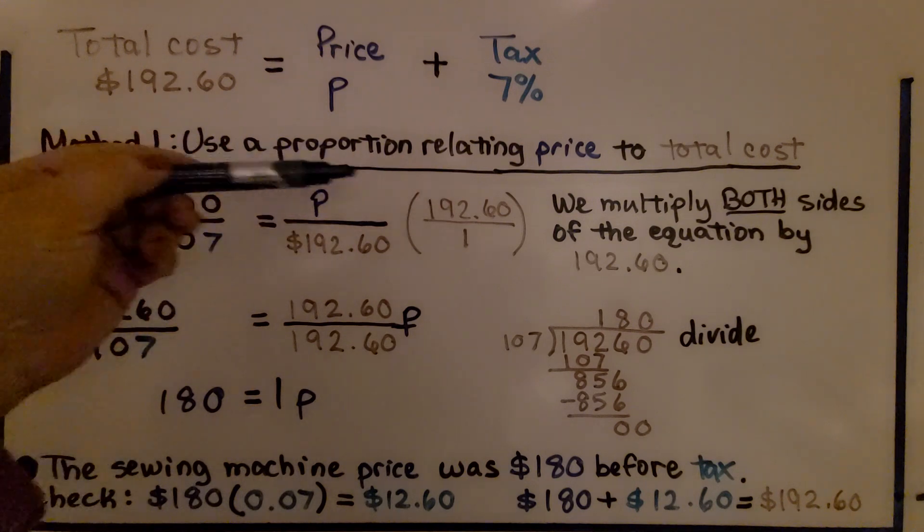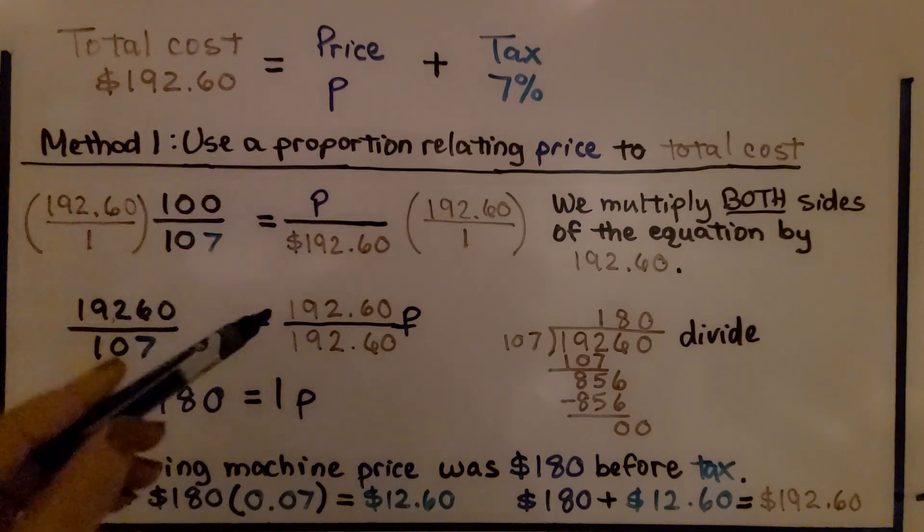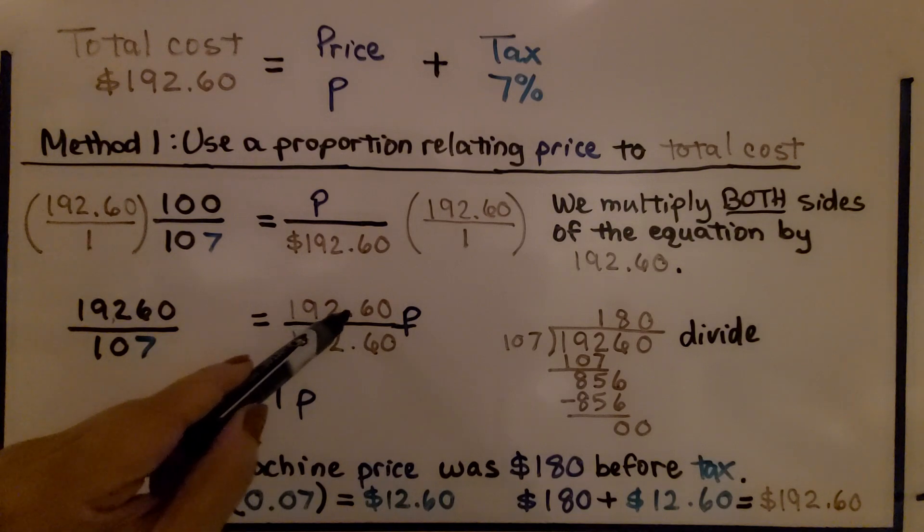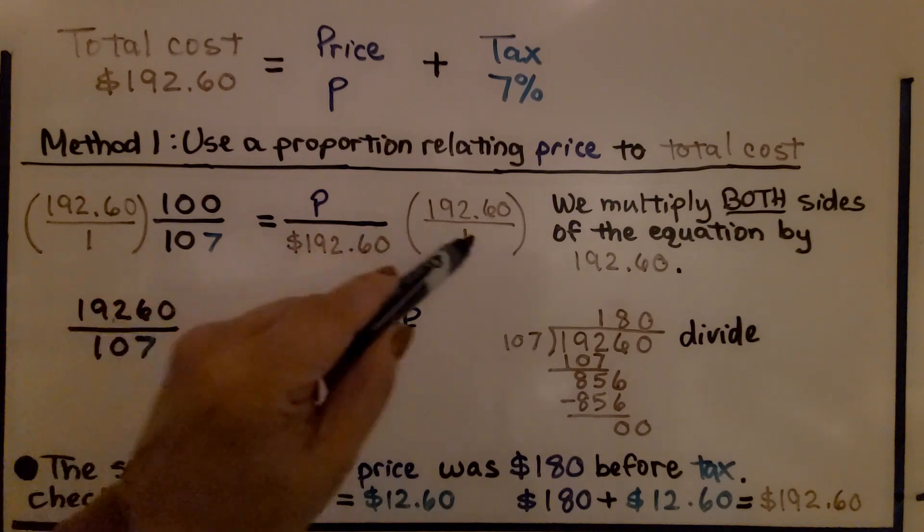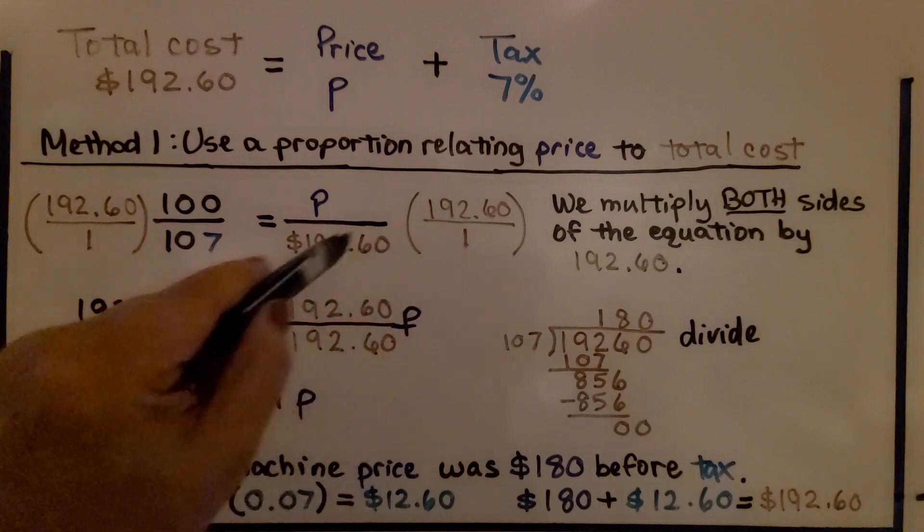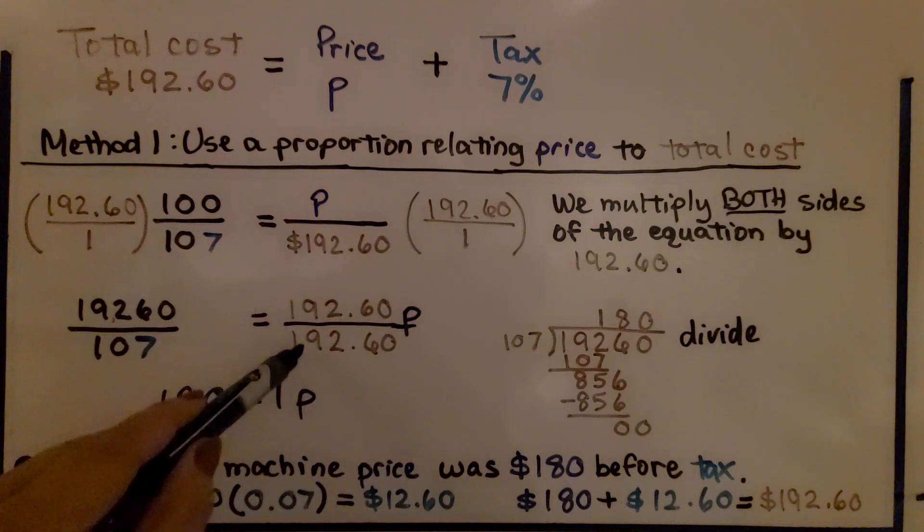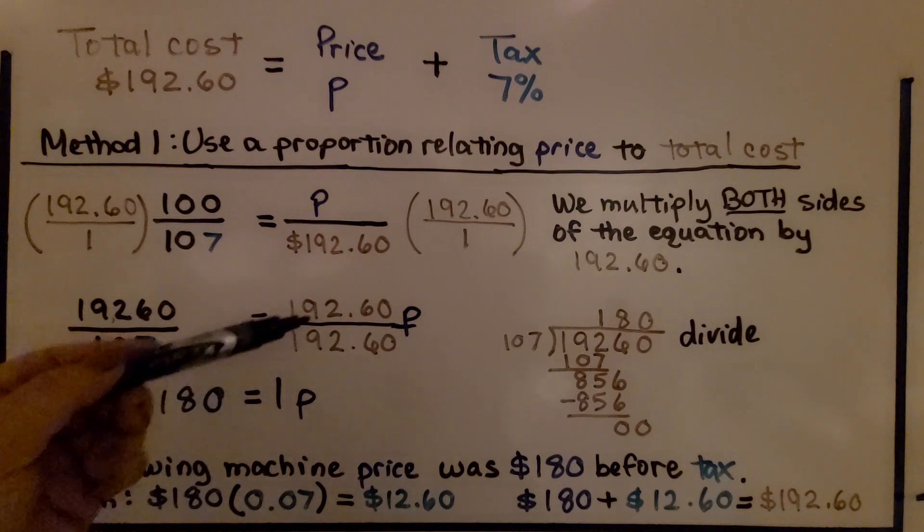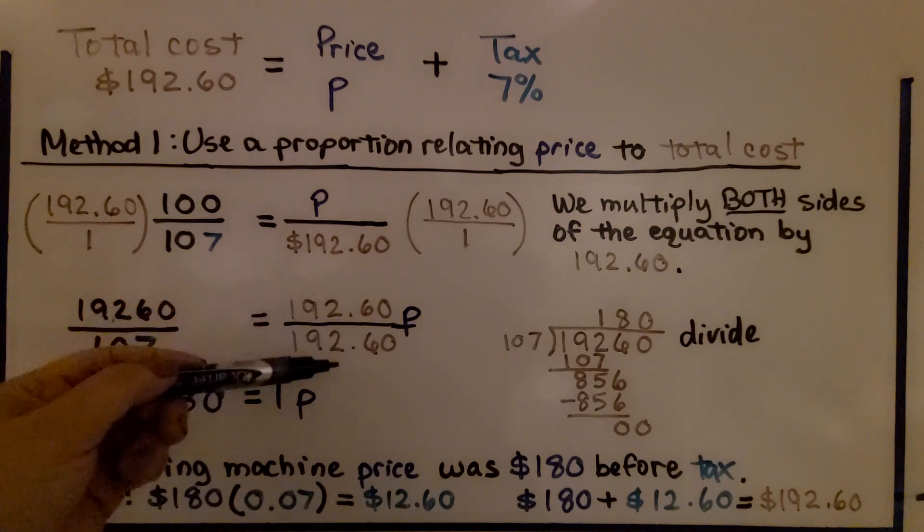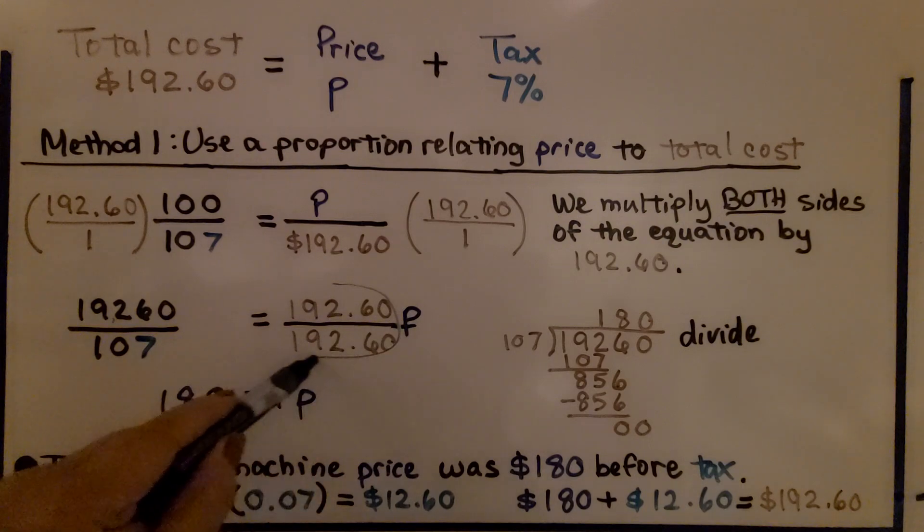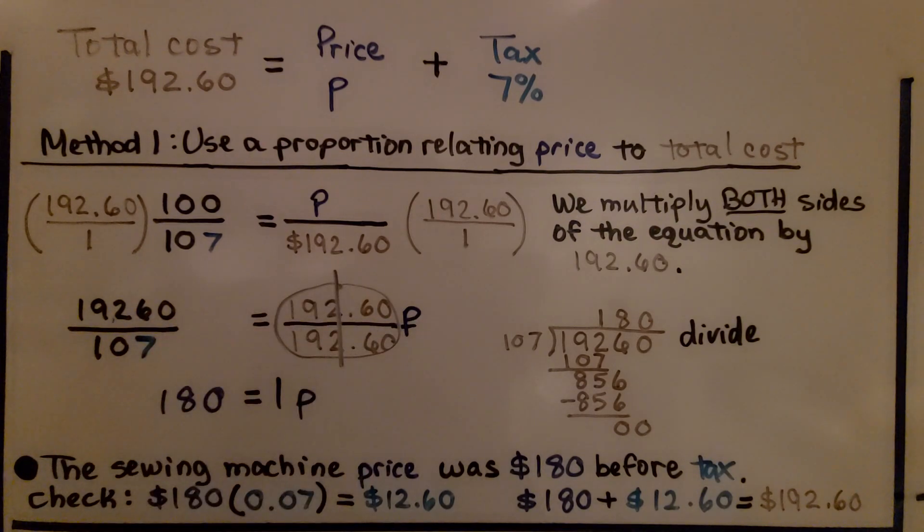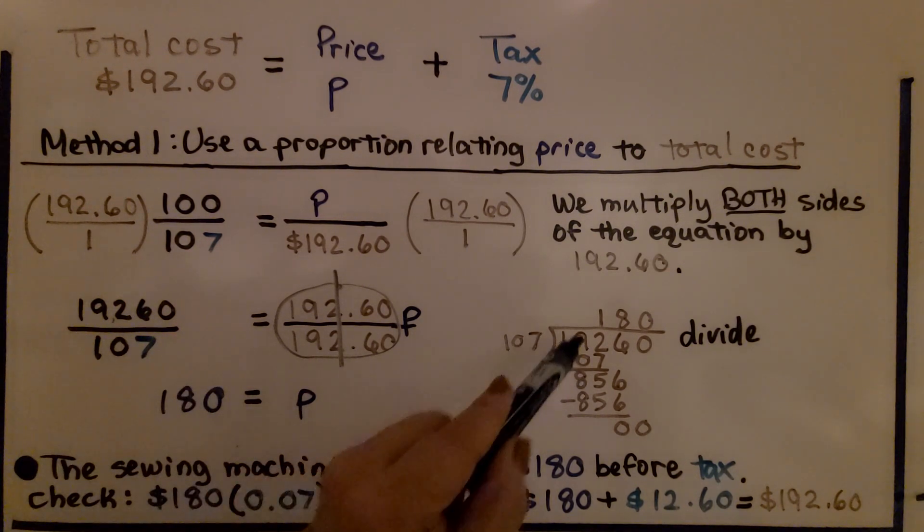So here, 192 and 60 cents times 100 is going to be 19,260 over 107. Here, we have 192 and 60 cents times P. That's going to be 192 and 60 cents P. Here, it's multiplied by one identity property. It's going to keep its identity, so we have 192 and 60 cents. Now, if you notice right here, we've got the same numerator and denominator. So this is really a one P. And we don't have to write that one, do we? When it's just a one next to the variable, we can just write the P. When we divide 19,260 by 107, we get 180.